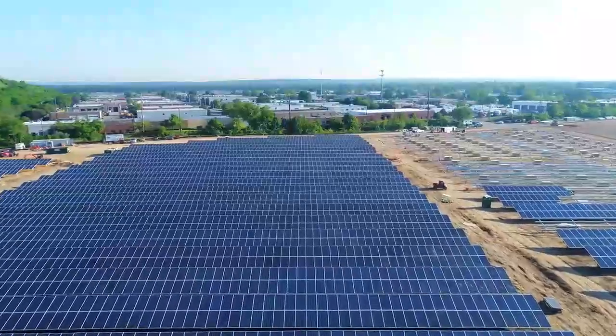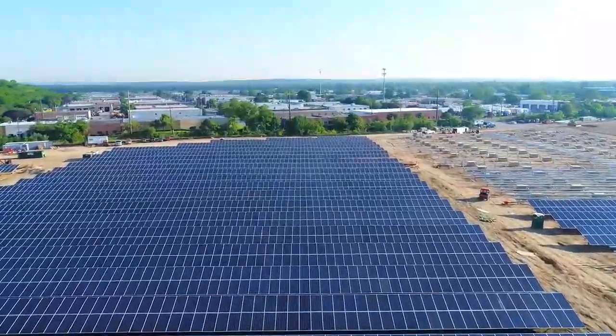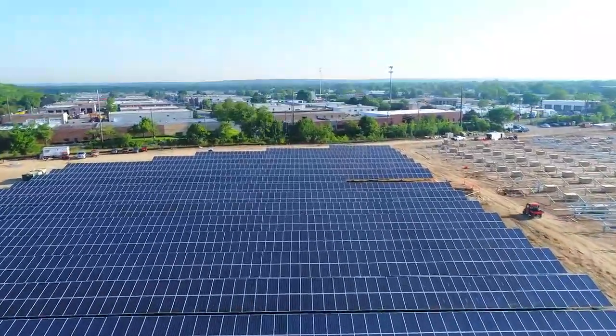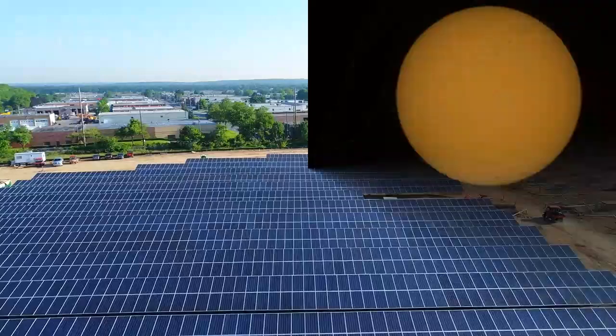At the beginning of the solar cycle, the Sun is in a state of solar minimum, characterized by a low number of sunspots and minimal solar activity. As the cycle progresses, the number of sunspots increases, signaling the Sun's peak activity, known as solar maximum.